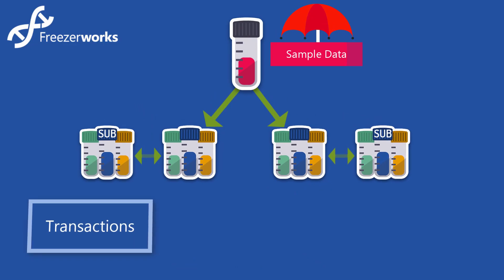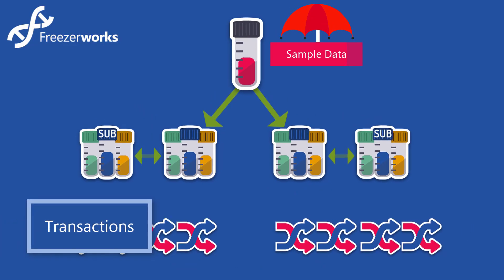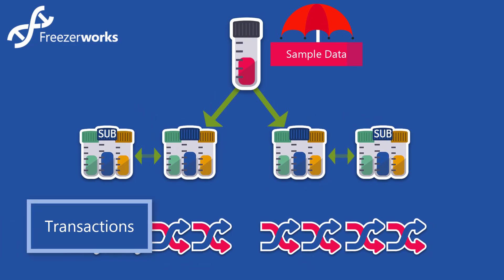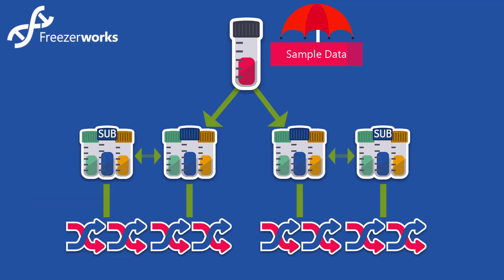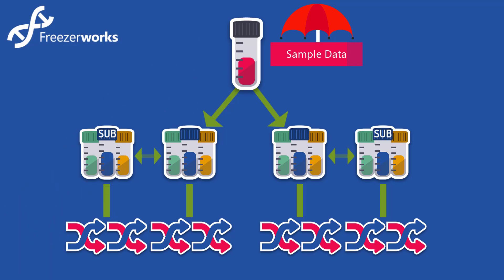For the bottom layer of our family tree, we add transactions, which are essentially actions performed on an aliquot that you want to track. These can be checkouts, check-ins, shipments, moves, thaws, etc. — anything you desire. Transactions are the grandchildren. They come from the aliquots, but they are still linked to the original sample and can be found using that sample's data and ID. In this way, transactions do not belong to more than one aliquot, just as aliquots do not belong to more than one sample.